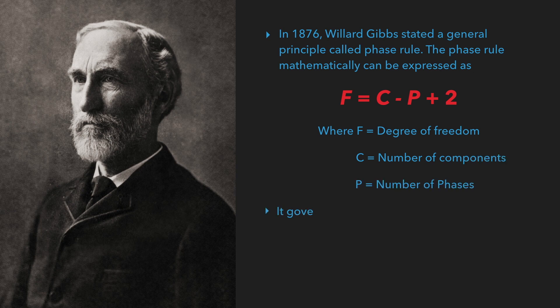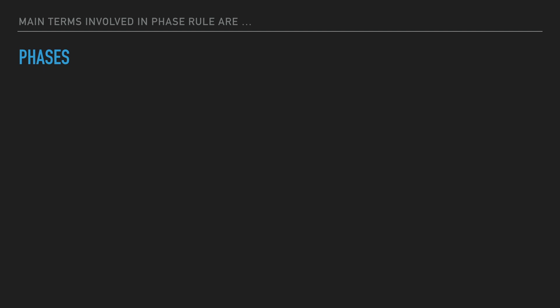The phase rule governs the behavior of heterogeneous systems. The main terms involved in the phase rule are p (phases), c (components), and f (degree of freedom).